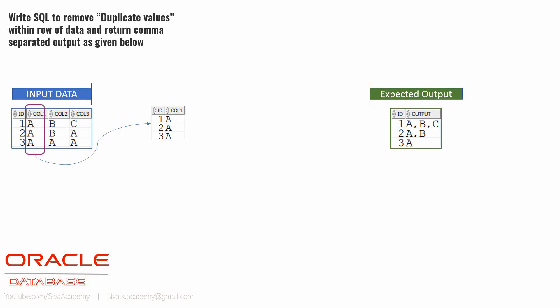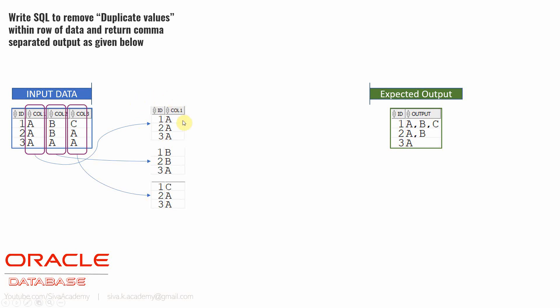Let us start with the very first approach. The logic I am going to follow: first, I am going to split the columns into multiple rows. So I am going to take ID and column one — the query is simply: SELECT id, column1 FROM table. This returns 1A, 2A, 3A. Next I pick the second column: SELECT id, column2 FROM table. Then the third column: SELECT id, column3 FROM table. Now we have three different queries — one for each column value. The intention is basically to remove the duplicates.